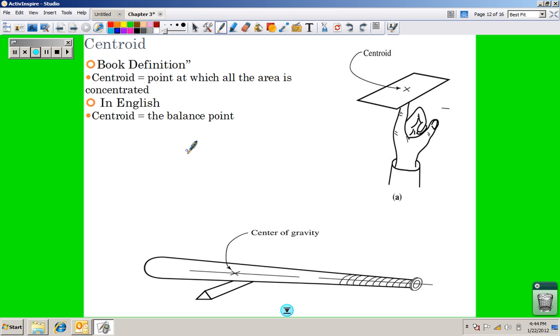So the book definition is centroid, the point at which all the area is concentrated. When we're talking about centroids, we're talking about two-dimensional objects. In English, it's where it would balance on the tip of your finger. Think about where you would balance a flat sheet of paper. When we're talking about three-dimensional object, we call that the center of gravity. So that's the basketball, that's your baseball bat, and of course, for a baseball bat, it's going to be further along the fat end.